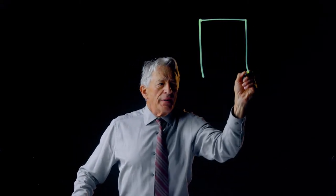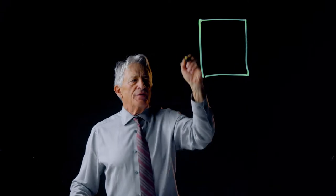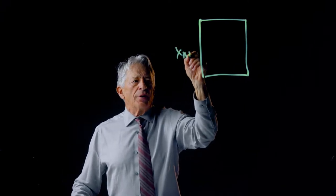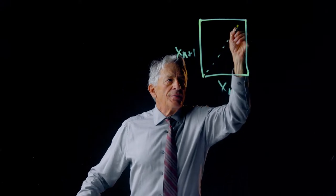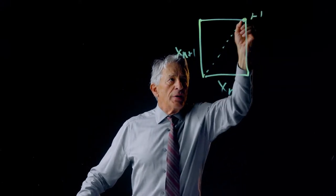So if we want to look at the time behavior, and we know xn+1 is a function of xn, and there is the 1,1 line.